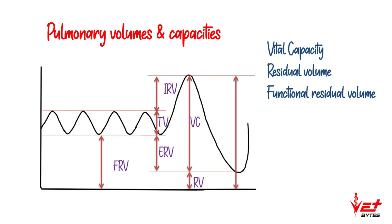The total volume covering from the topmost to the end is called total lung capacity. Total lung capacity is the sum of vital capacity and residual volume — it is the maximum volume to which the lungs can be expanded with the greatest possible inspiratory effort. And with that, we conclude pulmonary volumes and capacities.